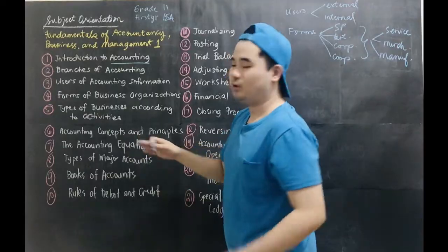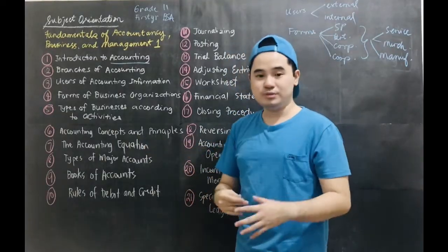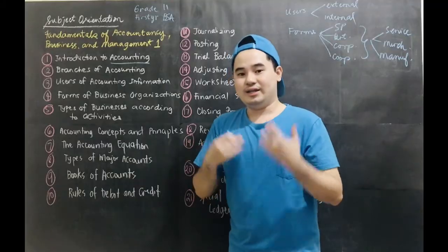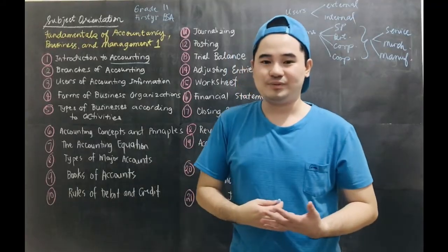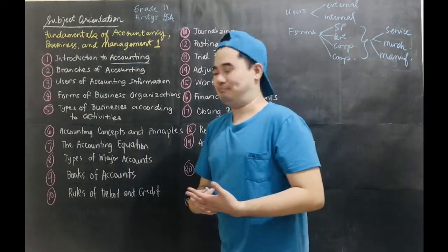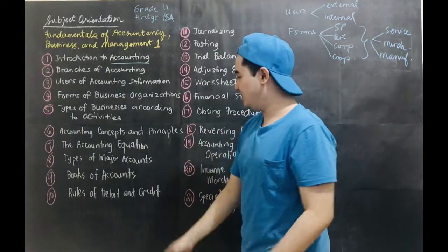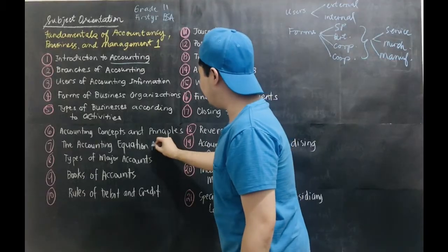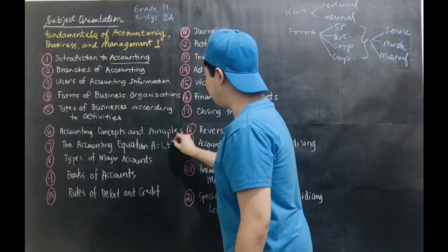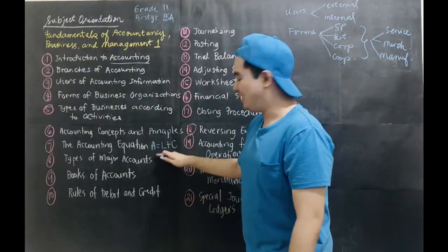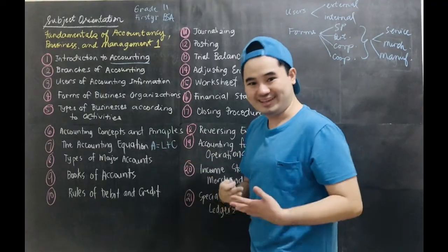And then we will also be talking about accounting concepts and principles that we usually use, and this will also include the generally accepted accounting principles, or the GAAP. And then the accounting equation. Just to give you an idea, the accounting equation is asset equals liabilities plus capital. So how will we analyze this equation and apply it in accounting?